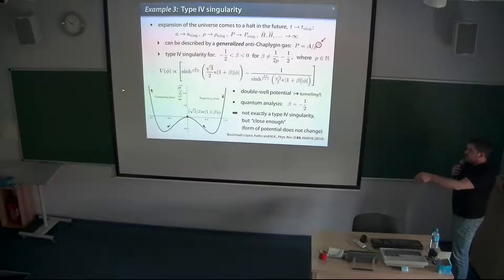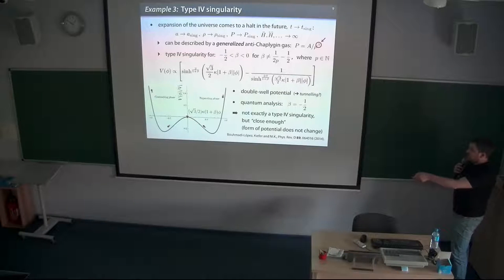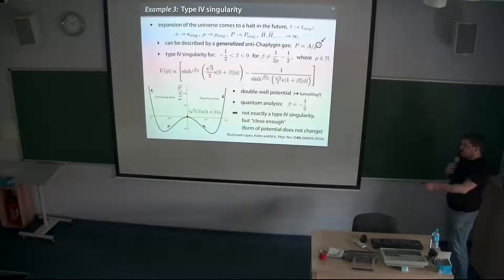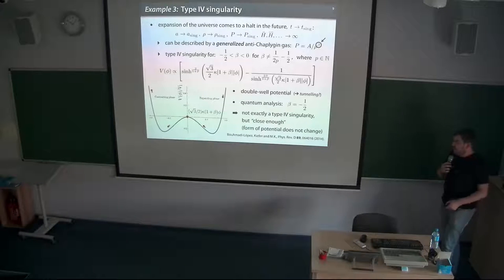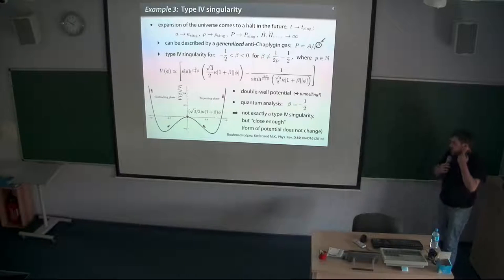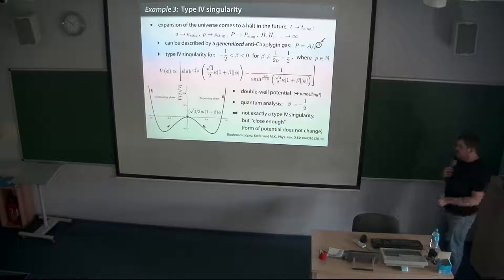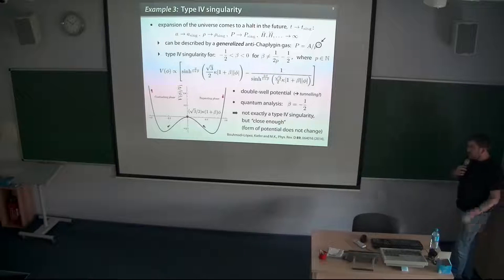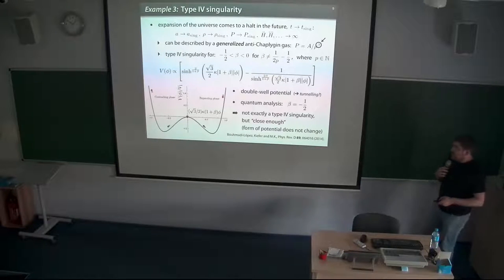In principle, if you avoid this singularity, you have the contracting phase. So one could also do this by some kind of tunneling analysis, where a wave function tunnels through the singularity. We discussed the case which is actually not exactly a type four singularity but which we could solve analytically. If you add a small epsilon, then you have a type four singularity, and the form of the potential does not change at all, so it's stable in this limit. We use this for the case, obtaining a very tractable equation.